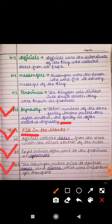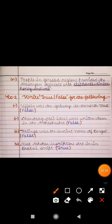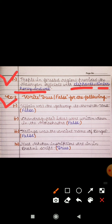The third blank: 'The Maurya rulers tried to control dash and dash which were important for transport.' The answer is roads and rivers, because both are important for transport. The fourth blank: 'People in forested regions provided the Maurya officials with dash.' The answer is elephants, timber, honey, and wax.